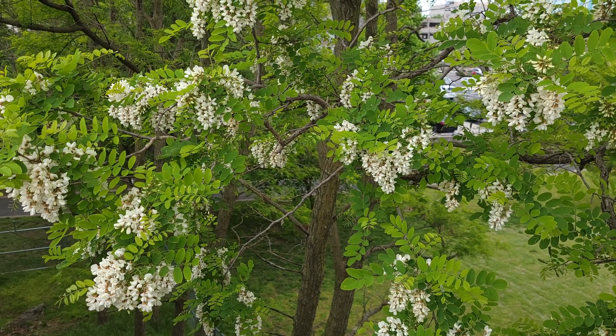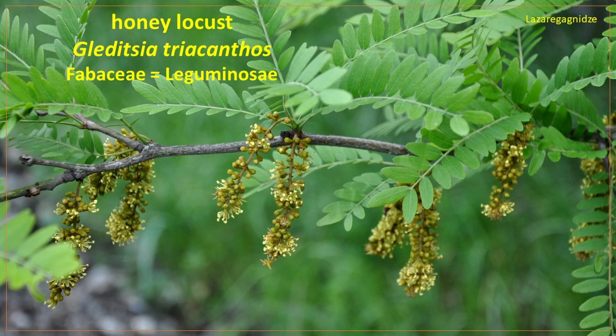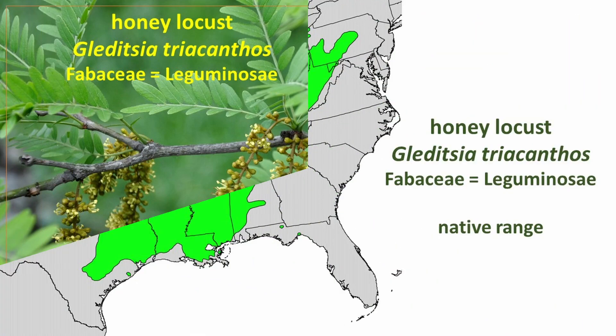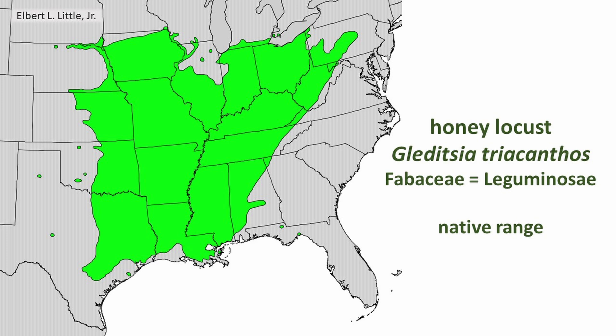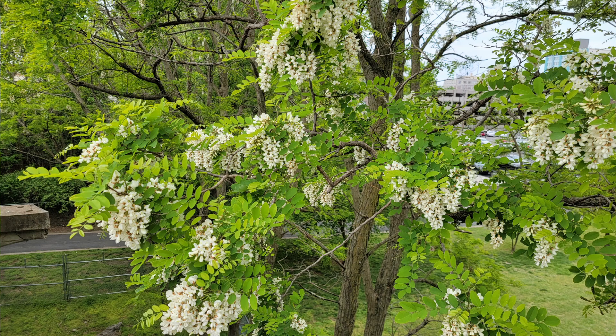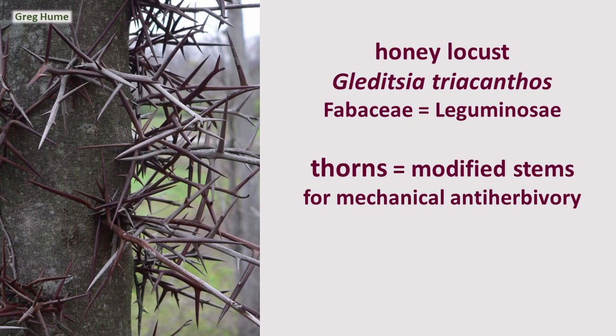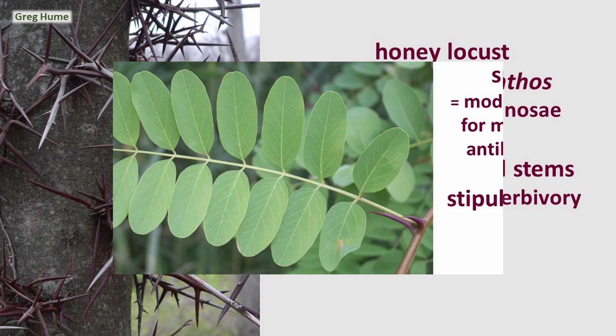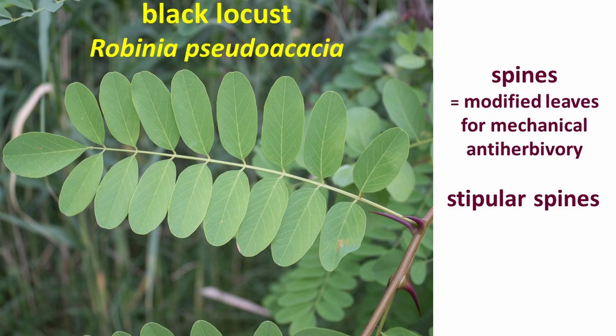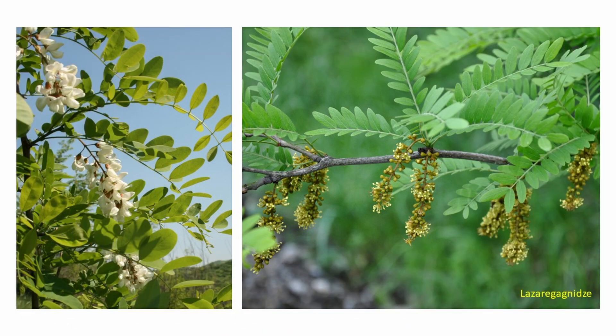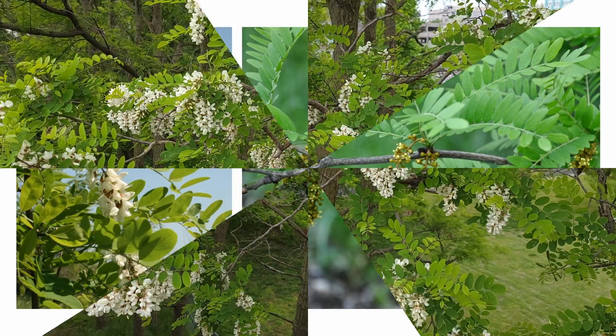Even though slightly similar to its cousin honey locust, also native to Eastern North America — Gleditsia triacanthos — black locust lacks the very intricate thorns straight on the trunk present on honey locust, instead having only stipular spines. The leaflets of black locust are also larger than the leaflets of honey locust.